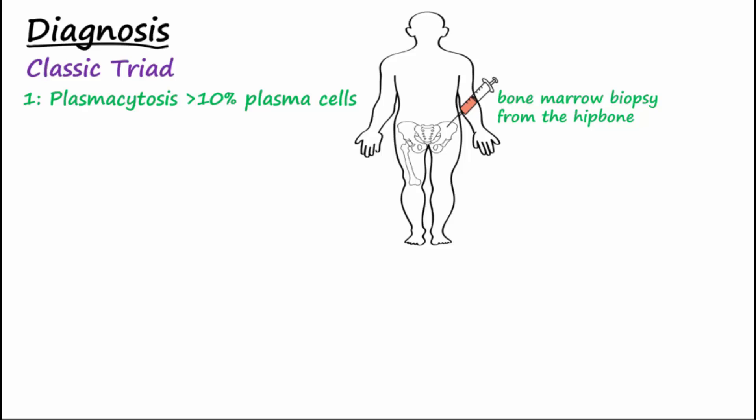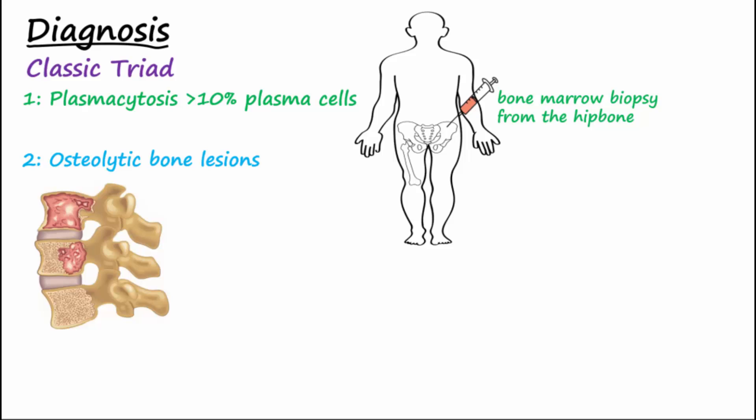Second, osteolytic bone lesions. Bone loss can be observed, and x-rays of the skeleton show lytic lesions or punched-out lesions.